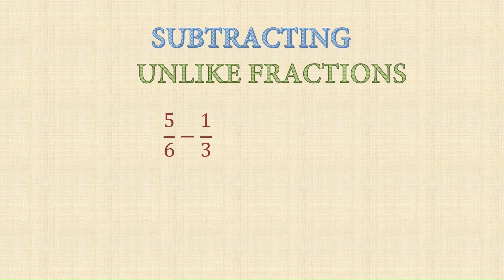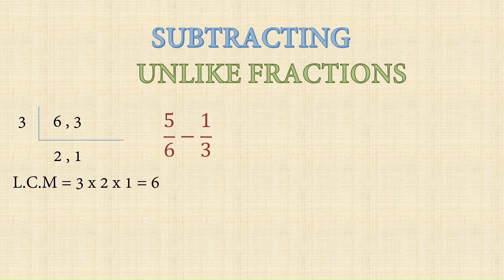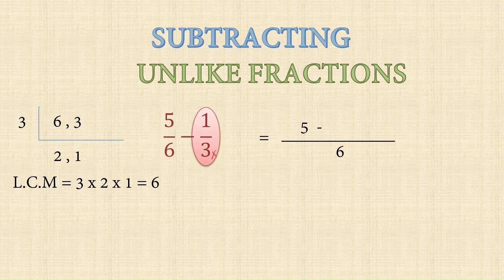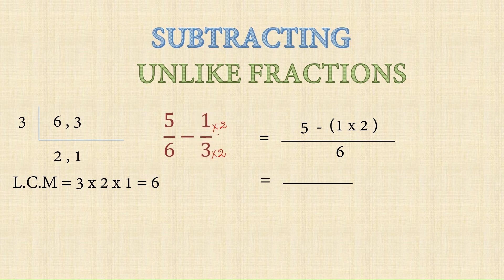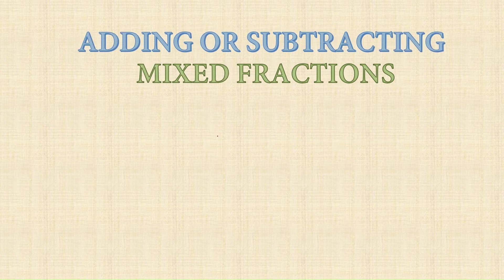Consider 5 upon 6 minus 1 upon 3. Here one denominator is a multiple of the other, so the LCM is 6. For the first fraction, write the numerator directly. For the second fraction, multiply both numerator and denominator by 2 to get denominator 6: 1 into 2 is 2. So 5 minus 2 upon 6 equals 3 upon 6, which simplifies to 1 upon 2.